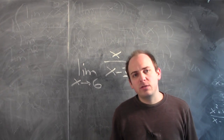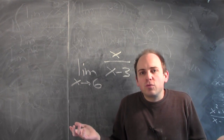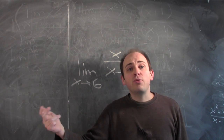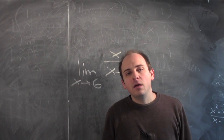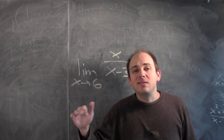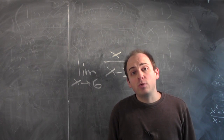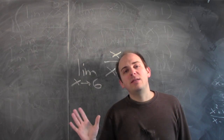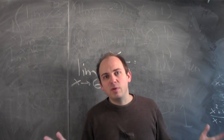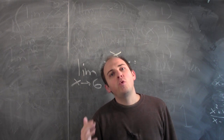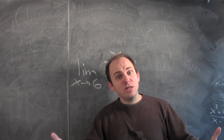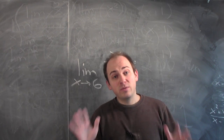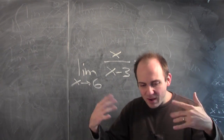At this point you might ask: why is the rule for limits of quotients different than limits of products? A limit of a product is the product of the limits, as long as those limits exist. Why do I have to worry about the limit of the denominator being non-zero when taking a limit of a quotient? Most basically, the problem is that you can't divide by 0. You can't tell people that the limit of a quotient is the quotient of the limits if the limit of the denominator might be 0.